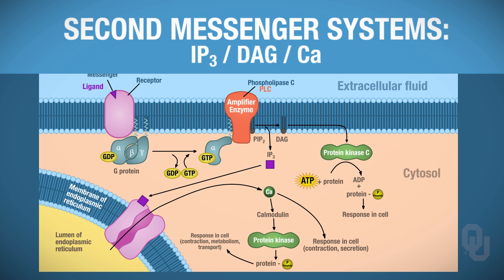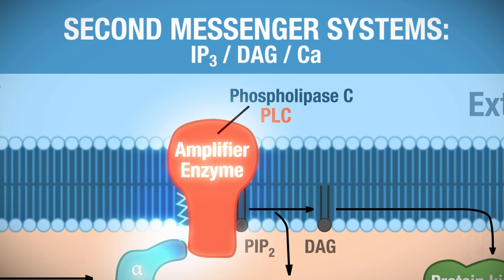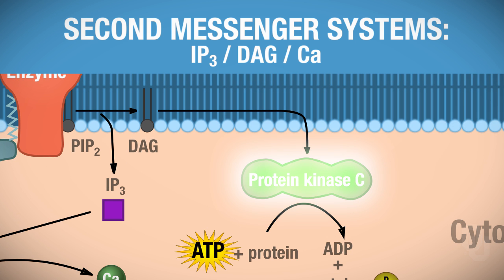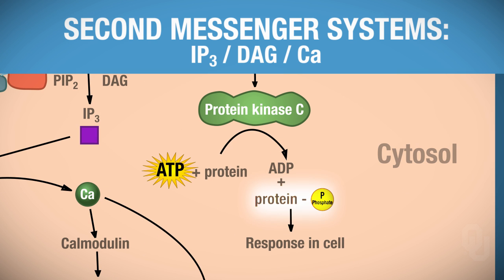Now let's look at DAG. The ligand binds to the receptor, you activate your G-protein, which activates your amplifier enzyme phospholipase C. Now PIP2, rather than being converted to IP3, gets converted to DAG — also a phospholipid and a second messenger that remains in the membrane. DAG then activates protein kinase C. Remember, cyclic AMP activated PKA, protein kinase A; DAG activates PKC, protein kinase C. Protein kinase C then phosphorylates a protein — it takes ATP to do that, so ATP is hydrolyzed — and then you get some sort of response inside of the cell.